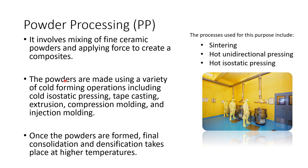So to be clear: in powder processing, cold forming operations are used to make the powders, and then sintering, hot unidirectional pressing, and hot isostatic pressing are used after the powders are formed for consolidation and densification. They're both under powder processing but at different stages — a common mistake students make.